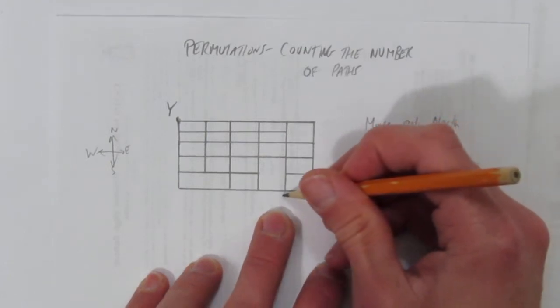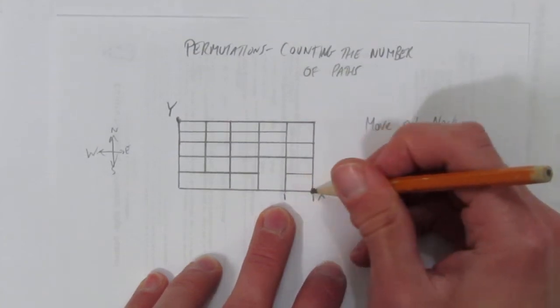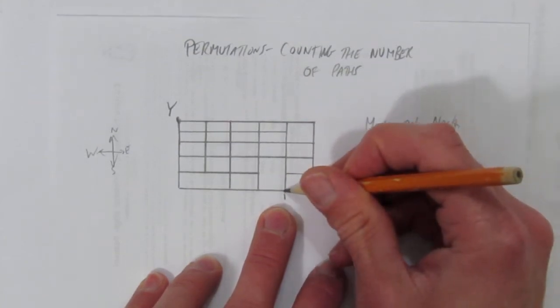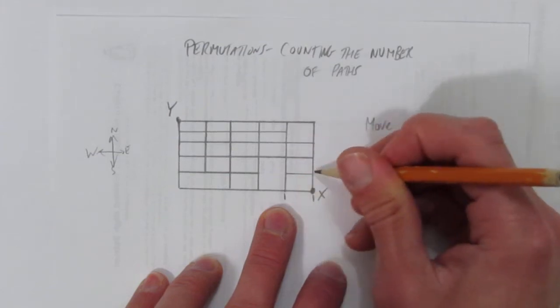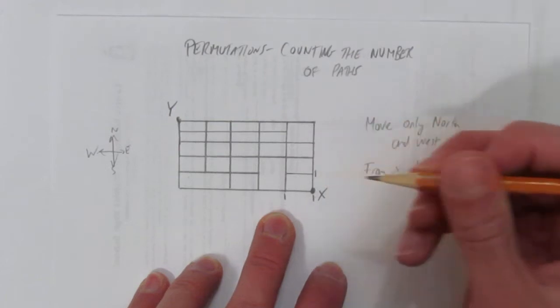So if we go left or west, that's a 1. Why? Because there's only one way to get here. You go like this. There's no other way to arrive at this intersection. Same thing with this intersection. There's only one way to get there. You start here, go there, that's it.